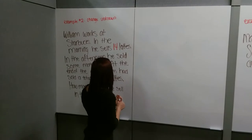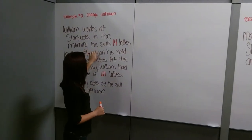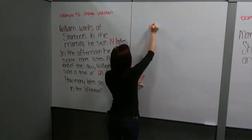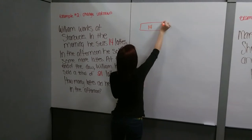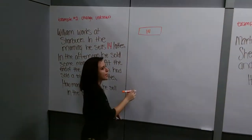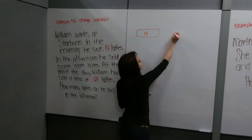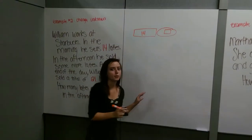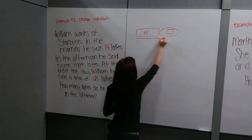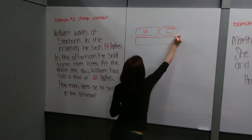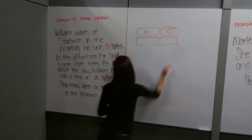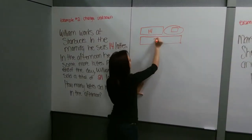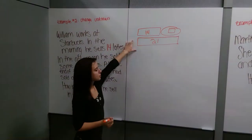If we draw our strip diagram, we start with the number that he sells in the morning, which is 14, and put that in our box. Then we put our next number — the number he sold in the afternoon — and since we don't know what that is, we put a circle with a box inside to represent the unknown. Then we do our total down here, and looking back at the problem, at the end of the day he had sold a total of 21, so our total is 21. That's what our strip diagram would look like.